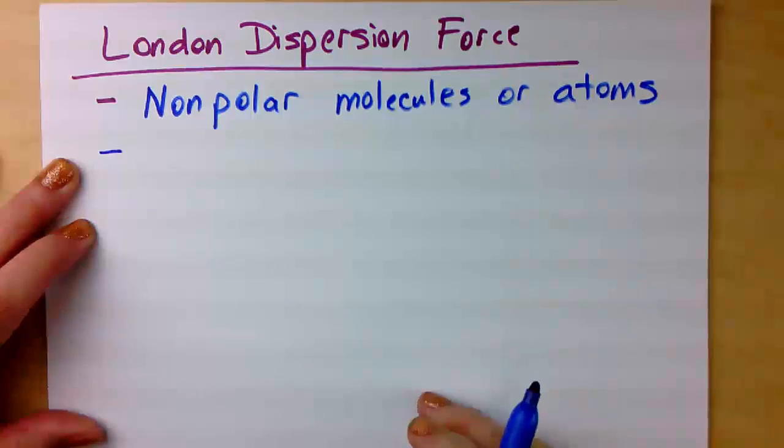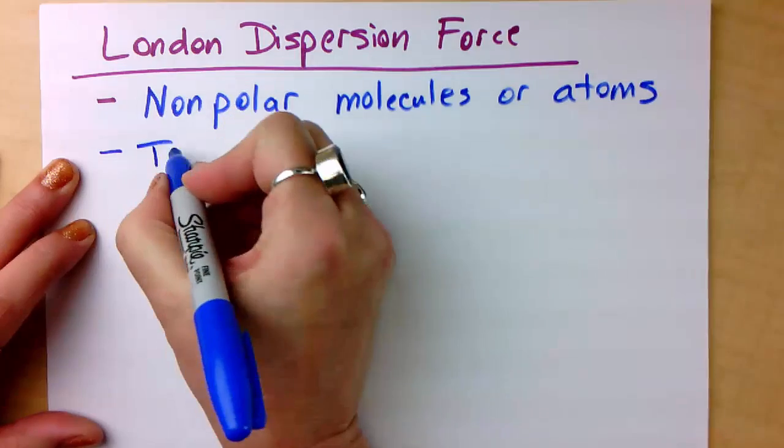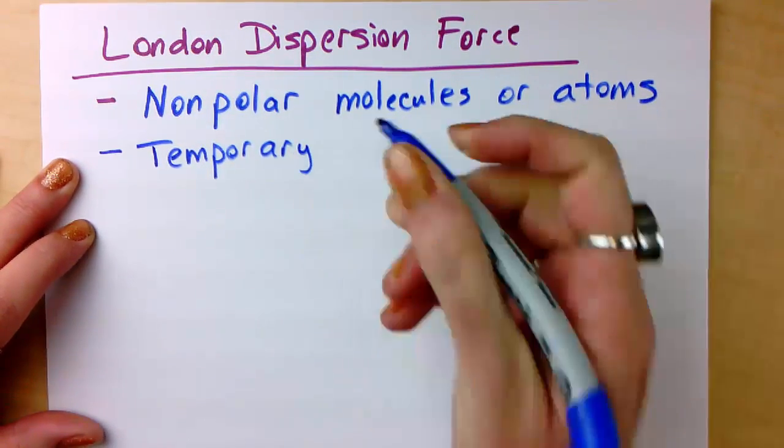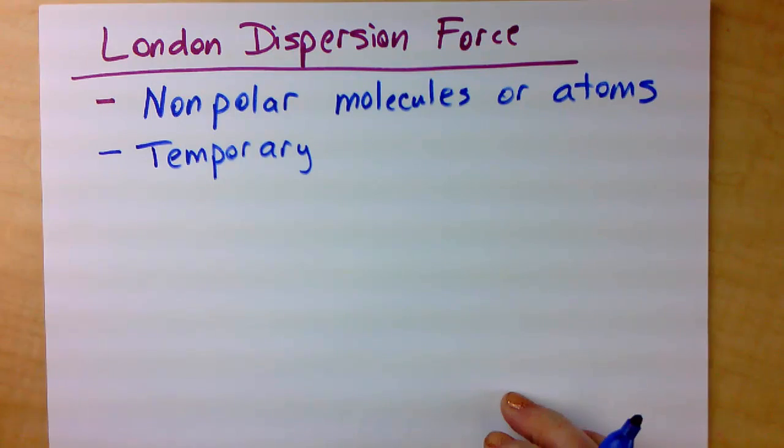Next, London dispersion forces are temporary, meaning they're not permanent, so they come and go.